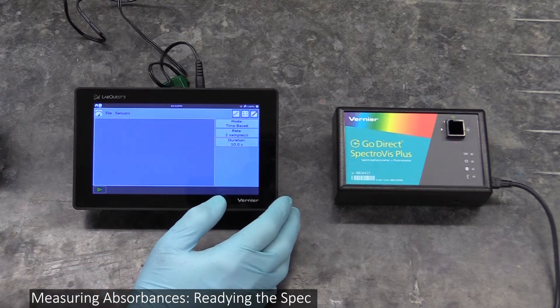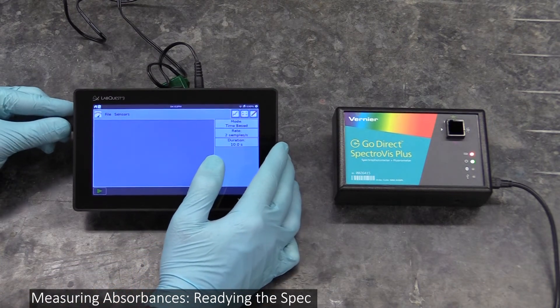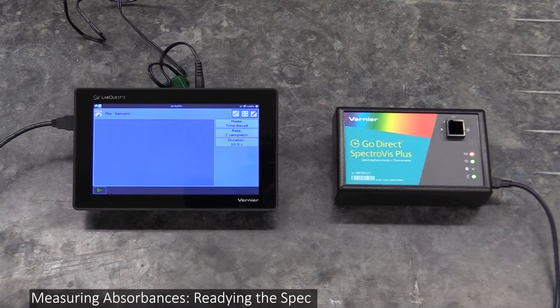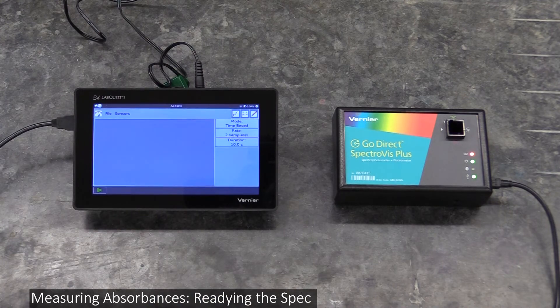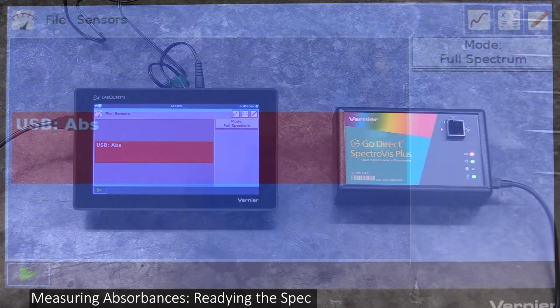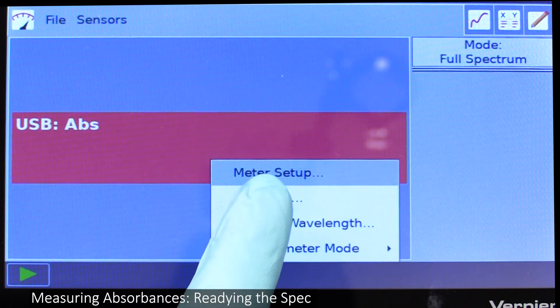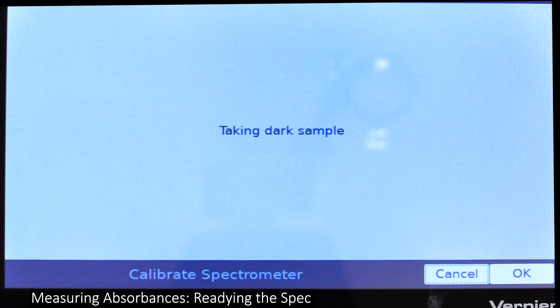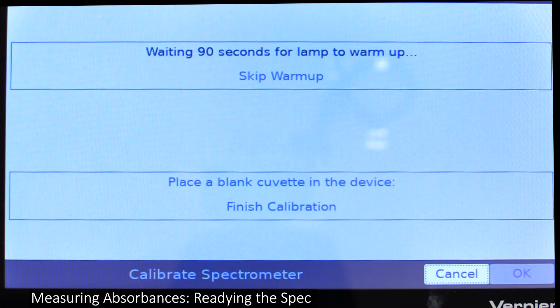Next, connect the spec and computer together with the USB cable. After a few seconds, the computer will figure out it's attached to something, and you'll get a big red box on the screen. Click on the box and select calibrate. You'll get some message about a dark sample, then a countdown timer will start for the lamp to warm up.